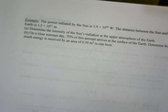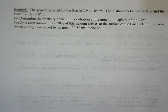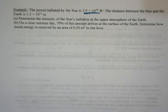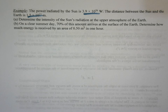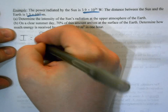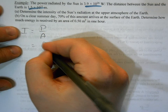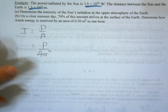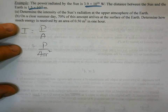Now for the last example: the power radiated by the sun is 3.9 × 10²⁶ watts, which we can get from the Stefan-Boltzmann law. The distance between the sun and the earth is 1.5 × 10¹¹ meters. We want to determine the intensity of the sun's radiation at the upper atmosphere of the earth. Intensity equals power over area, and we assume the power radiates out in a concentric sphere, so area = 4πr².